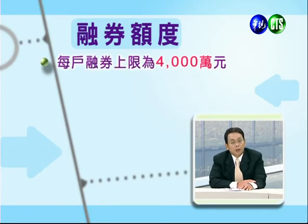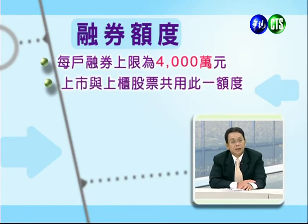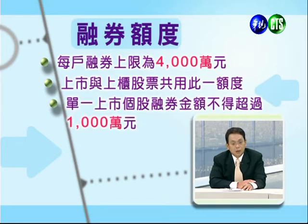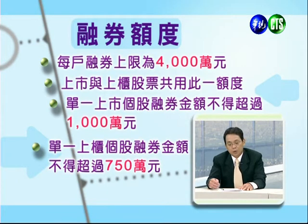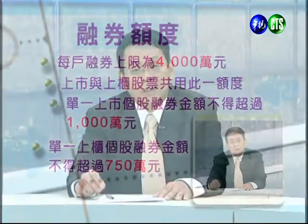单一上市股票的融资金额上限不可以超过一千五百万，上柜股票融资部分不可以超过一千万。融券部分，每户融券上限额度是四千万，上市上柜股票都用同样额度；单一上市个股不可以超过一千万，单一上柜个股不得超过七百五十万。这样的规范是为了控管信用扩张与信用风险。